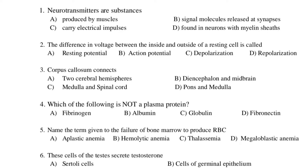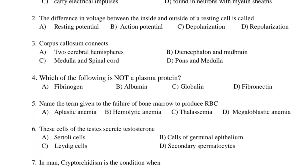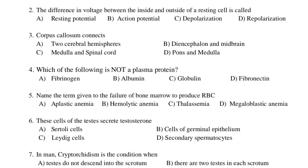Fifth question: Name the term given to the failure of bone marrow to produce RBC. A. Aplastic anemia. B. Hemolytic anemia. C. Thalassemia. D. Megaloblastic anemia.